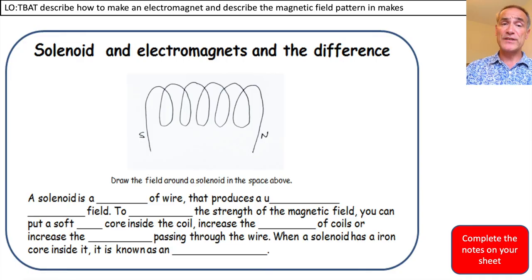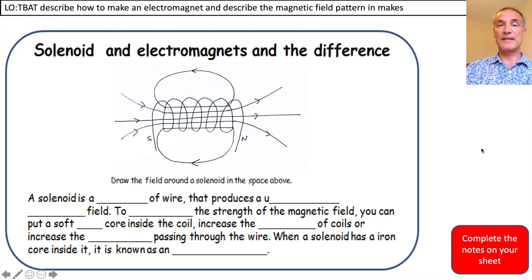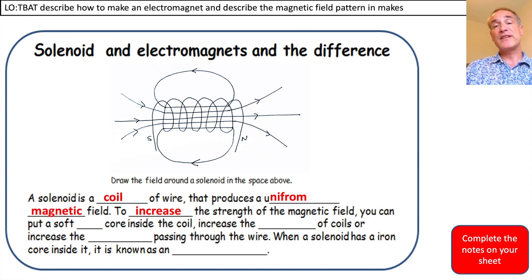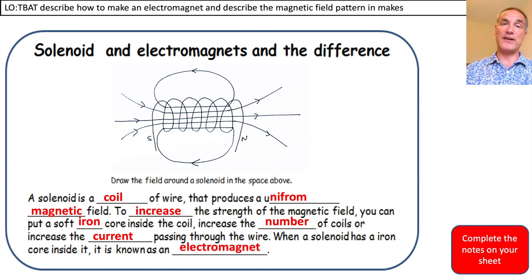To recap: a solenoid is a coil of wire that produces a uniform magnetic field. To increase the strength of the field, you can put a soft iron core inside the coil, increase the number of coils or turns, or increase the current passing through the wire. When a solenoid has an iron core inside, it is known as an electromagnet.